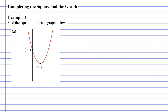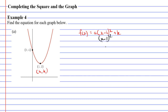We learned in an earlier video that quadratic functions can be written in the form A times (x minus h) squared plus k. When we look at the graph, you can see that our vertex is the point (1, 2). You might remember that our vertex is written in the form h comma k. We can see that h equals 1 and k equals 2, and there's only one number we need to find.